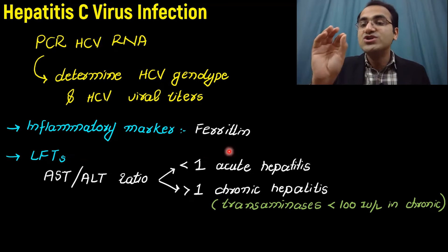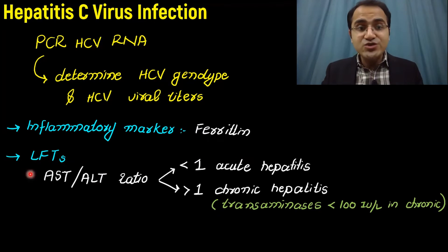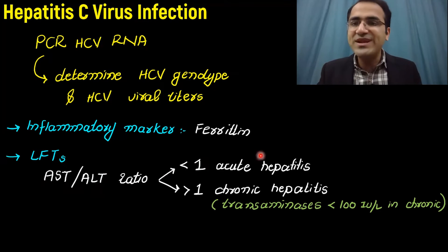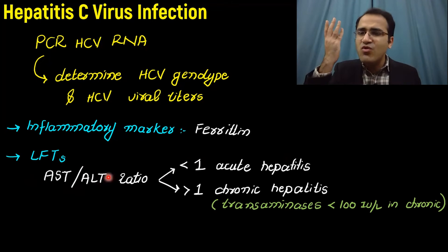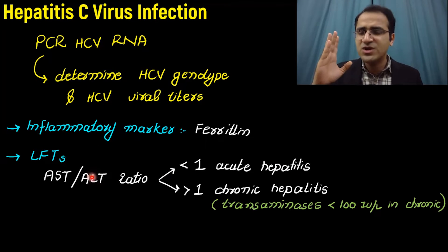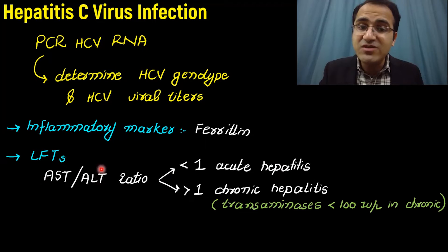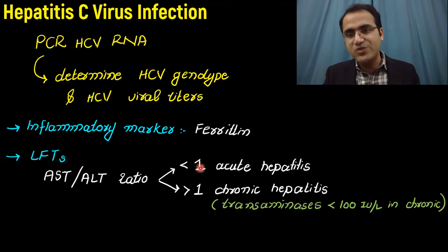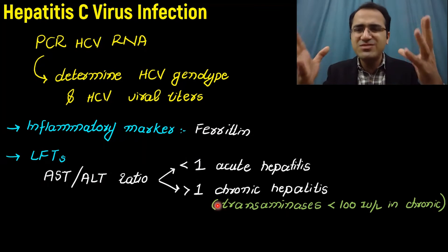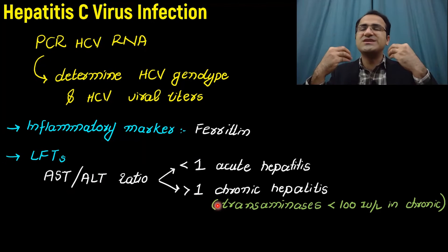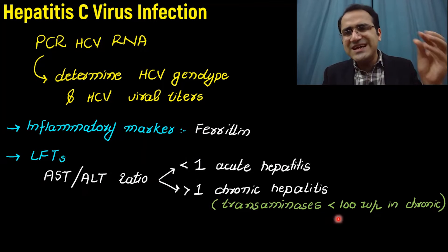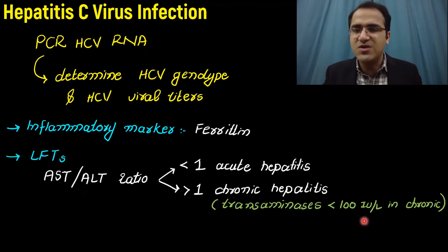Ferritin is an inflammatory marker that is raised in HCV cases, and a raised ferritin indicates poor prognosis. On liver function tests, the AST to ALT ratio will be less than one in acute hepatitis because ALT is elevated much more than AST — often in the thousands in acute viral hepatitis. In chronic hepatitis, as the liver becomes damaged, enzymes are lost; ALT decreases and the AST:ALT ratio becomes greater than one, with transaminases below 100.